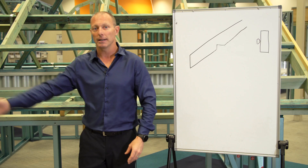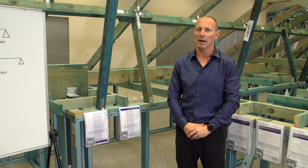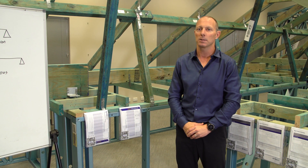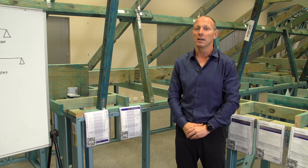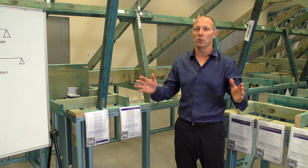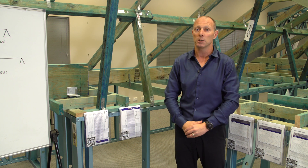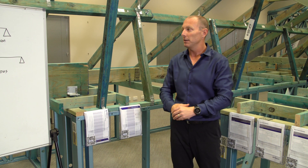Now let's look at the underperlins. With underperlins, similar to rafters, we are concerned about our spans. For a single span underperlin, 83 by 51, you are looking at 1400 millimetres. For a continuous span, you are looking at 1800 millimetres.